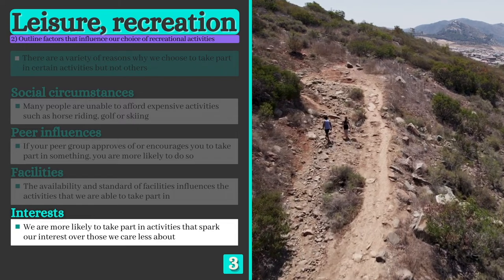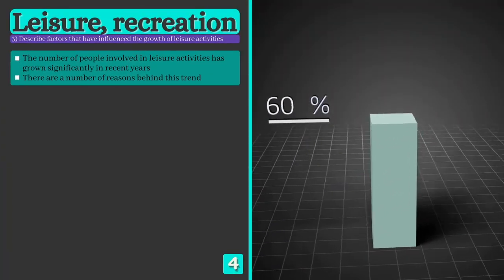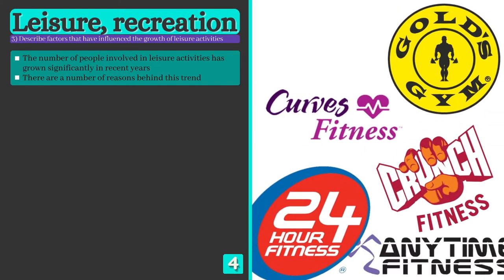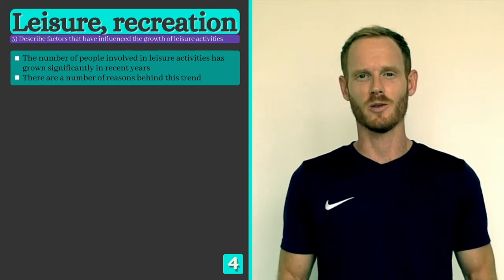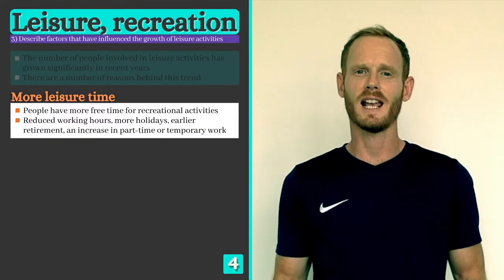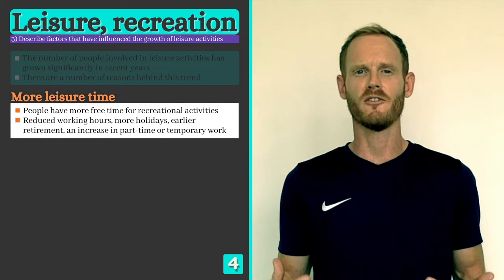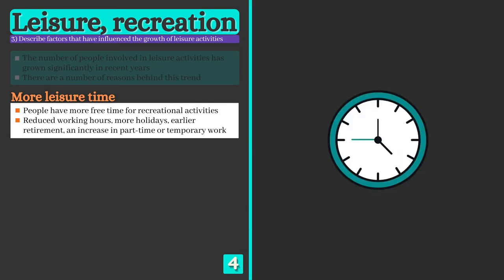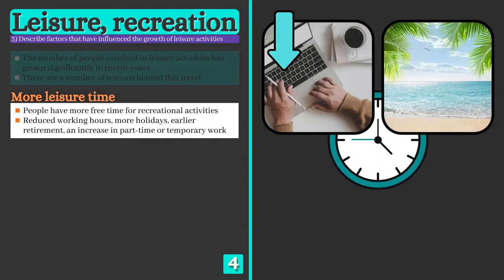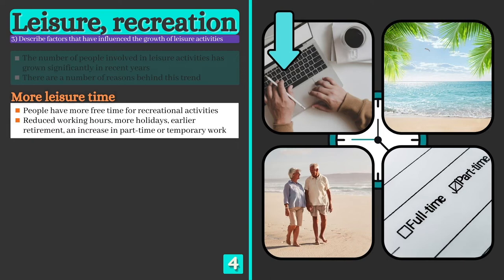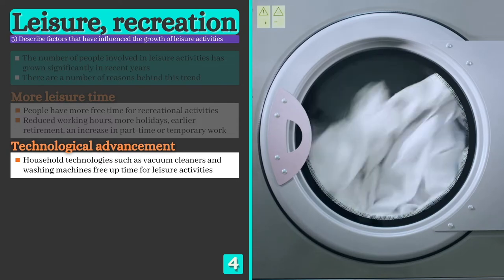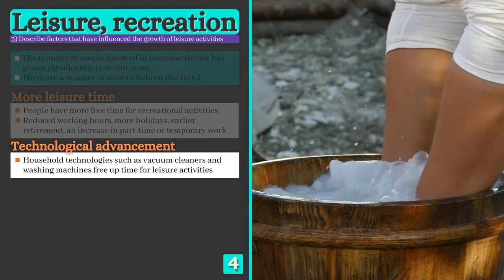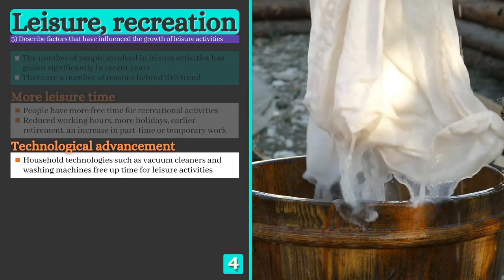In recent years the leisure industry has grown enormously, with more people involved than ever before and the global gym industry now worth an estimated $100 billion. Firstly, people generally have more leisure time today than they did in previous years, giving them the freedom to pursue their interests. This shift was due to several factors including a reduction in working hours, more holidays, earlier retirement for many, and a general increase in the number of people in part-time and temporary work. Advances in household technologies such as washing machines and dishwashers also free up time that would otherwise have been spent on chores such as cleaning and washing clothes.